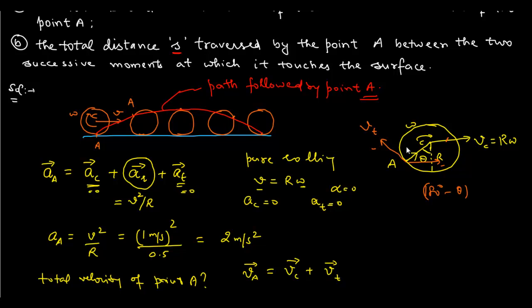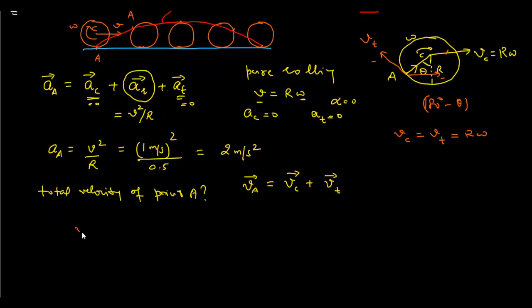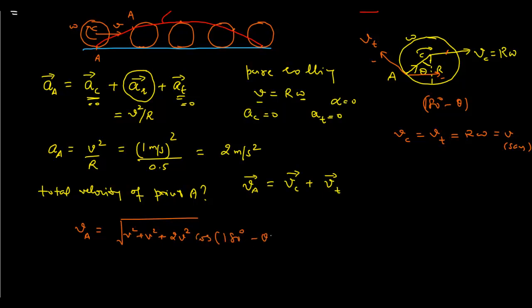Since it is under pure rolling, Vc and Vt have the same magnitude equal to r·omega, both equal to V. So we can write the magnitude of Va as: |Va|² = V² + V² + 2V²·cos(180° − θ), which simplifies to |Va| = 2V·sin(θ/2), or equivalently 2V·sin(ωt/2).